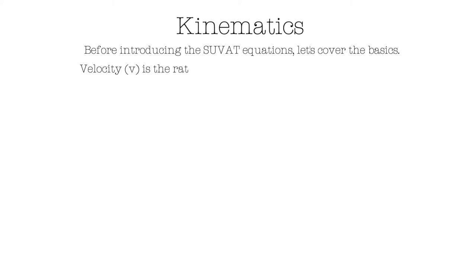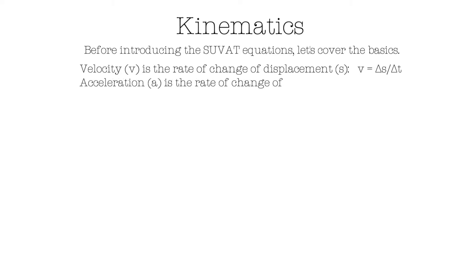Velocity, or V, is the rate of change of displacement. The equation for this is V equals delta S over delta T. Acceleration, or A, is the rate of change of velocity. The equation for this is A equals delta V over delta T. Note that the triangles in the equation, or delta, represents the change in — like delta S over delta T means the change in displacement over the change in time.